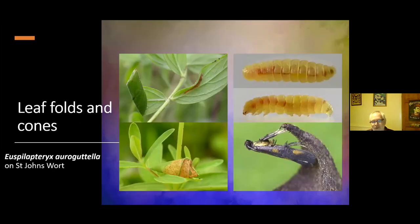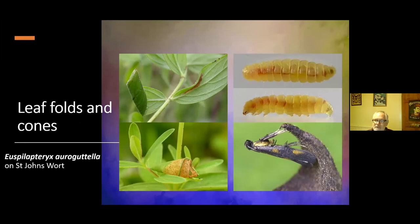Other leaves get folded into cones, and again the plant that you find it on will usually determine the species of moth. This is a really good example because nothing else is going to do this on St John's Wort species - this is Euspilapteryx auroguttella. You can find these feeding signs in summer and again in late autumn. It's quite a spectacular moth but I've never had it in the moth trap, though I've found it in the field quite a few times.